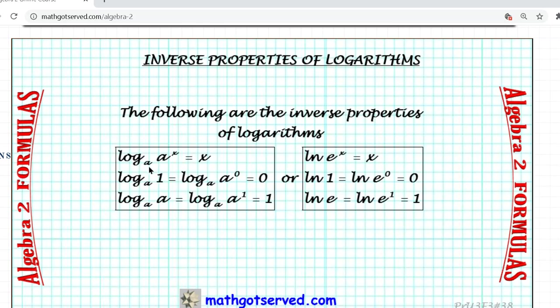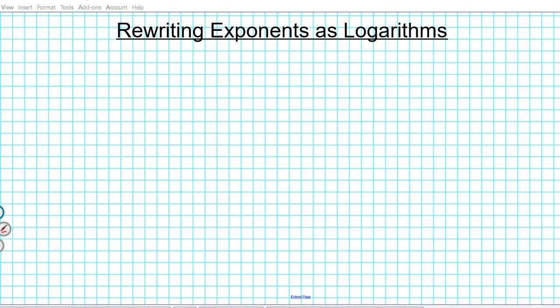These formulas help us see the inverse relationship between logs and exponents. If you're taking the log of an exponent and the base of the log and the exponent are identical, you have a cancellation action happening, and you're left with the exponential value — the value of the power x.